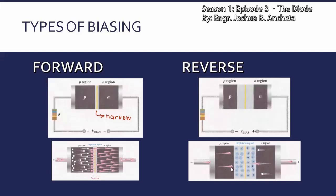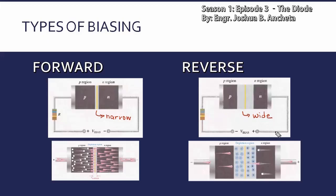Itong mga minimal electron flow na ito, ito yung tinatawag nating reverse current or leakage current. Mapapansin din natin sa depletion region, kumapal — mas makapal siya kumpara sa forward condition. So ito yung tinatawag nating wide depletion region. So again: sa forward bias condition, ang depletion region natin narrow; sa reverse bias condition, ang depletion region ng diode, wide.